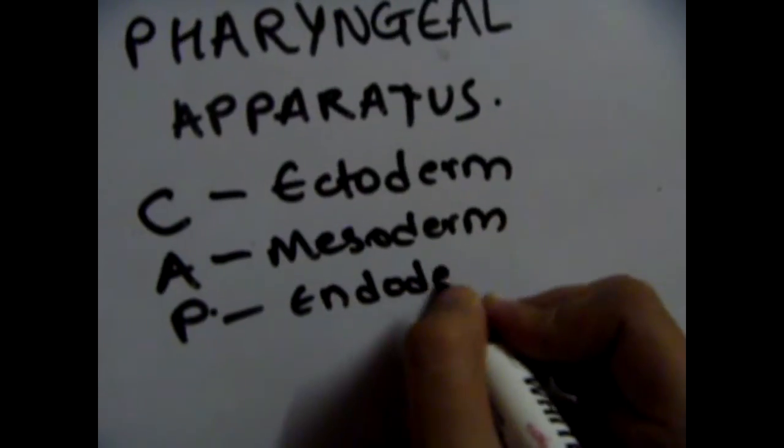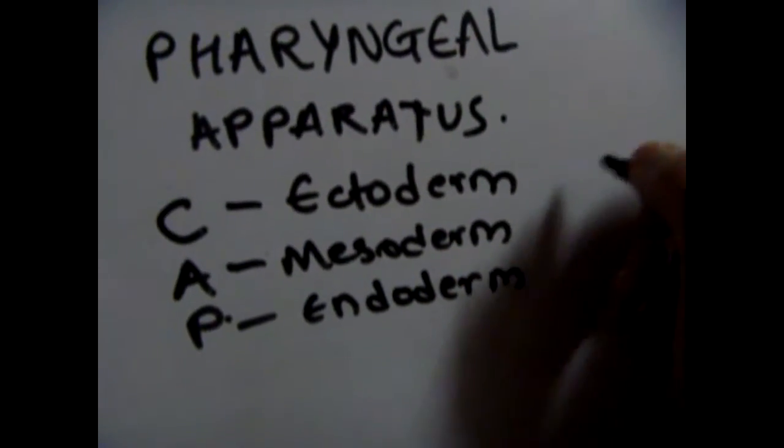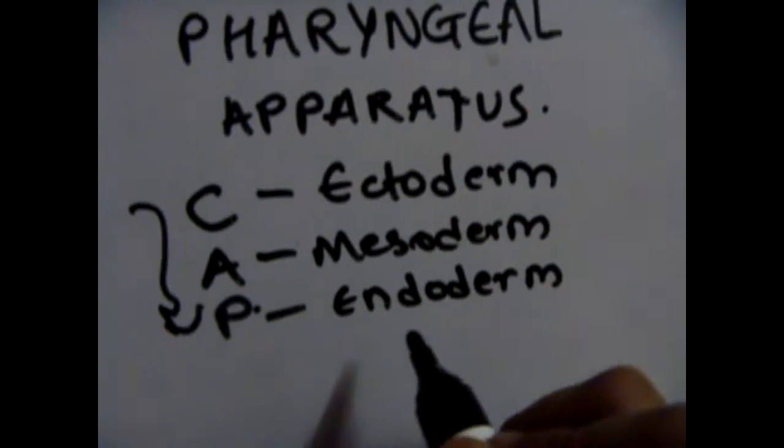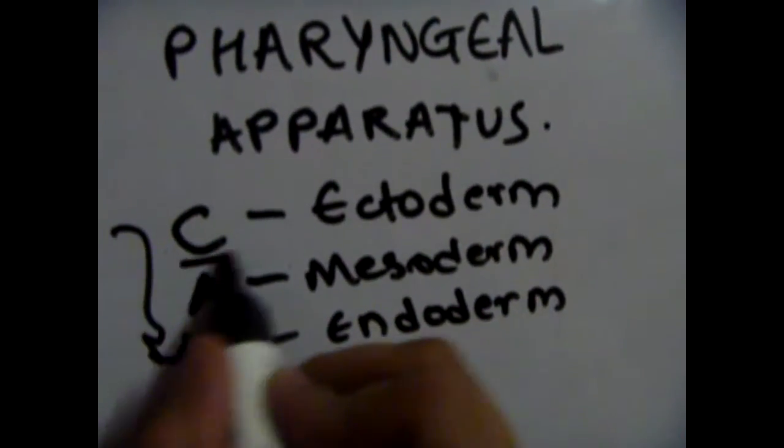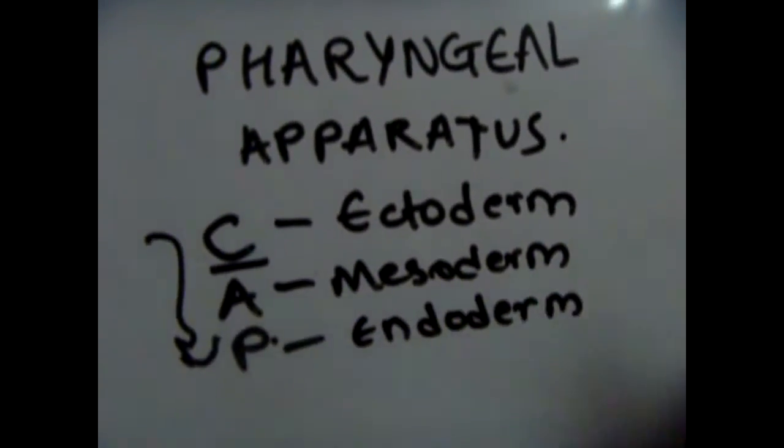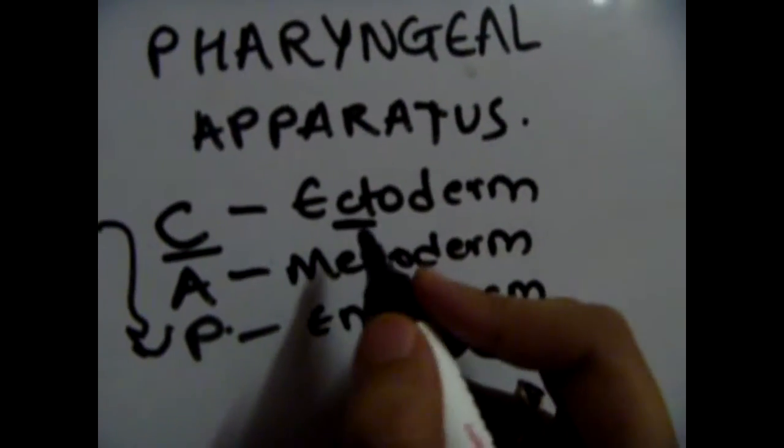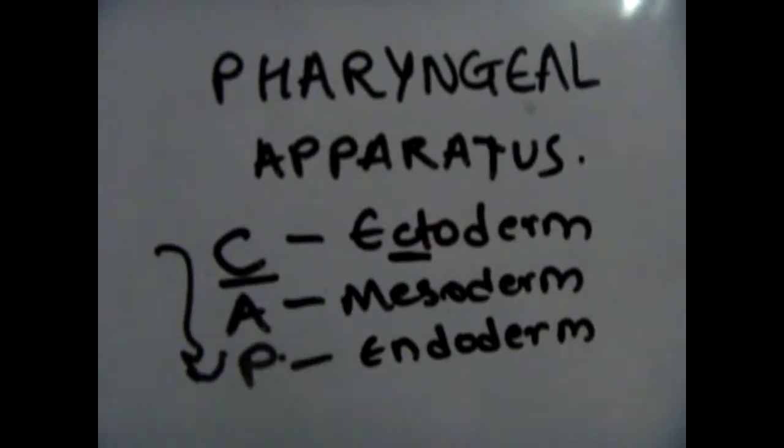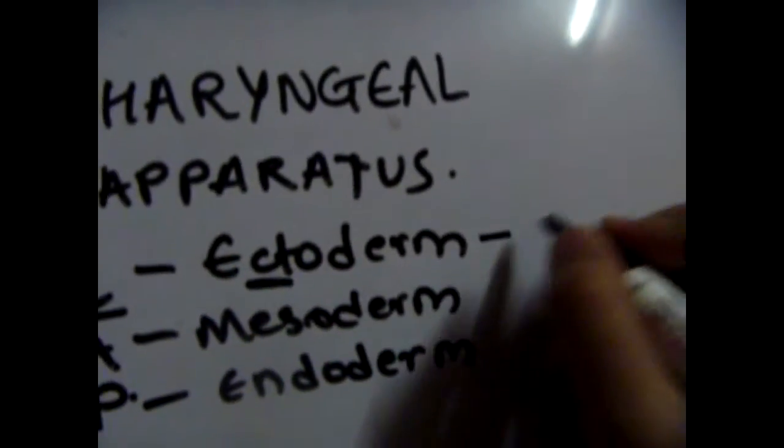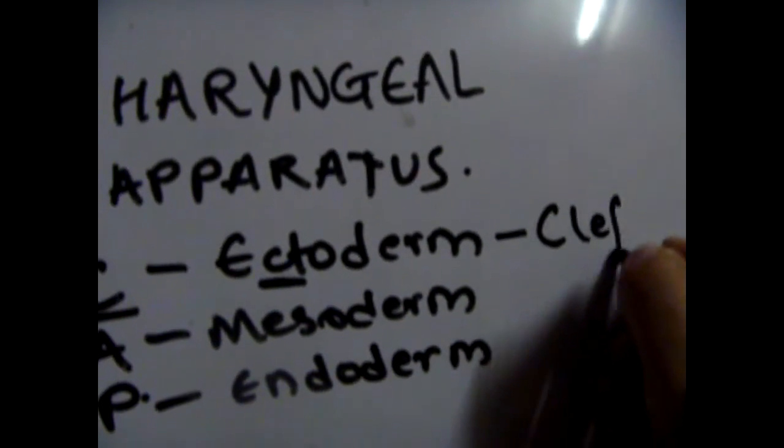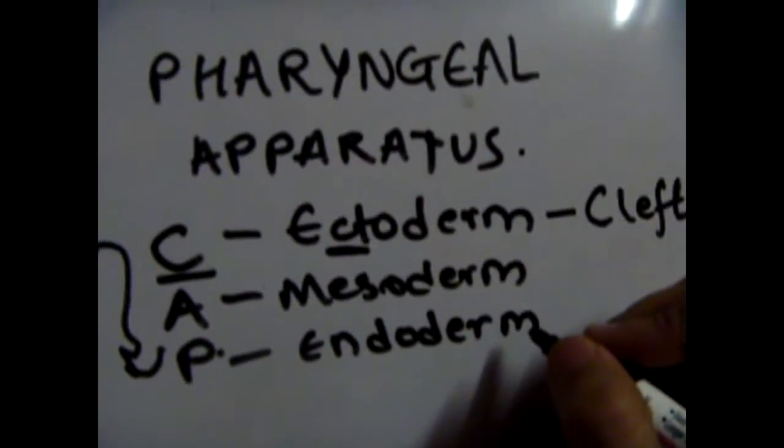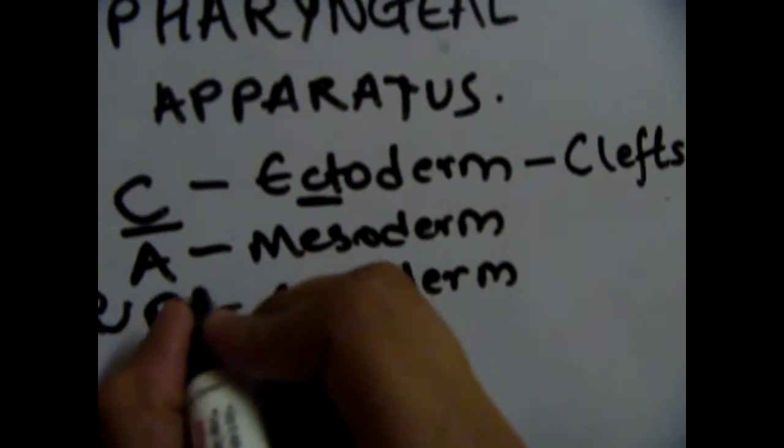When you go from outside to inside, it goes as CAP. There's another way to remember this: C for CAP is ecto, and the C stands for cleft, so that's branchial clefts or pharyngeal clefts.